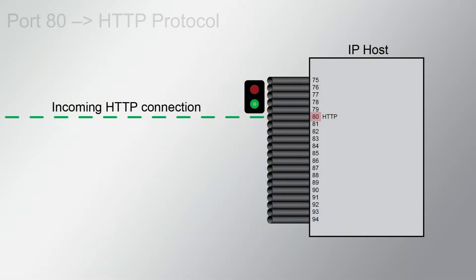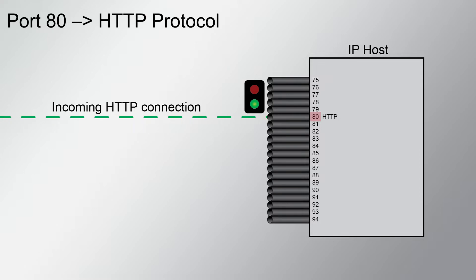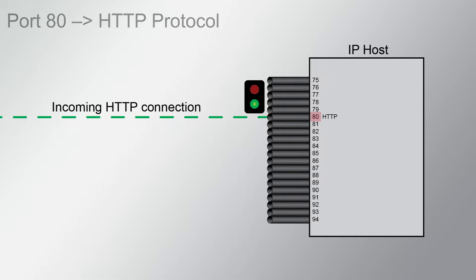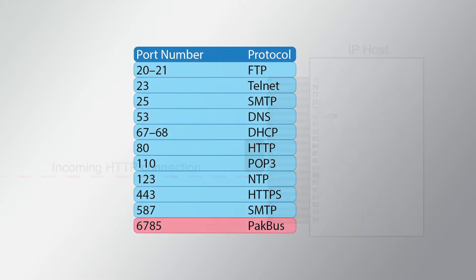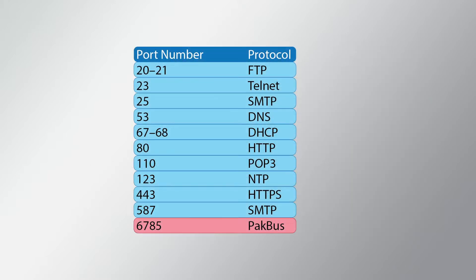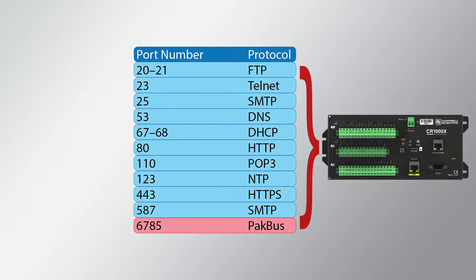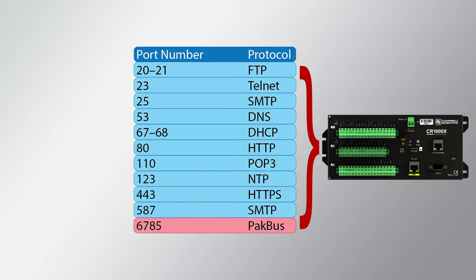For example, port 80 is used with the HTTP protocol. If an HTTP request comes in on port 88 instead of 80, the host won't know what to do with the request because it did not come in through the expected port. Here is a list of well-known ports and the network protocols they support. Port 6785 is important to Campbell Scientific dataloggers because it is the default TCP/IP port used for PakBus communications.